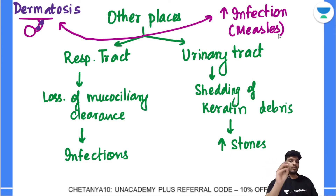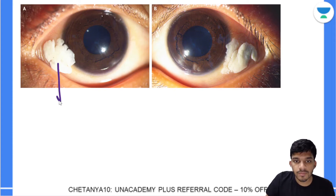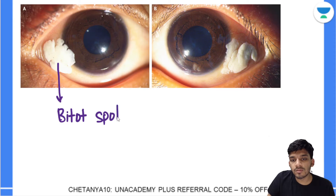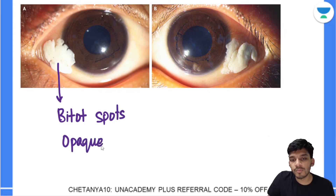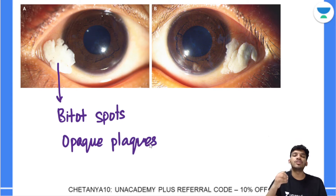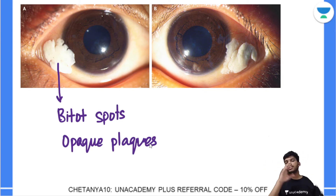Measles and diarrhea are two important correlations with Vitamin A deficiency. The image shown here is of Bitot's spots — opaque plaques formed due to keratinization of the corneal epithelium, ultimately leading to keratomalacia and corneal ulcers as the next stage.